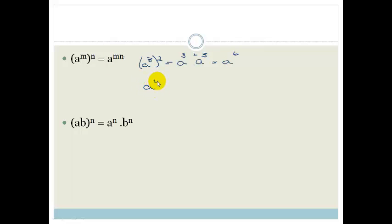The rule is that a to the 4 to the 3, what do we do? We times across the bracket. So that just becomes a to the 4 times 3, which is 12.